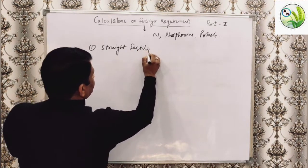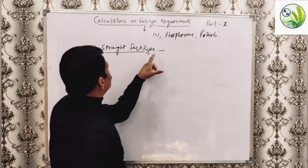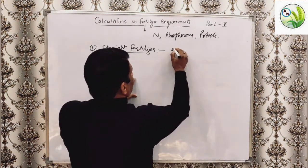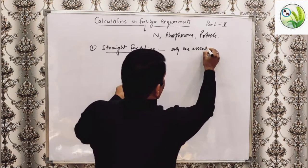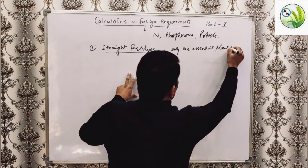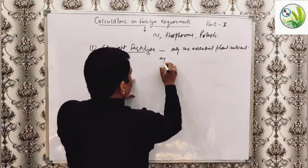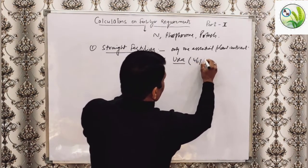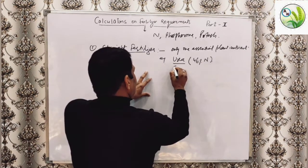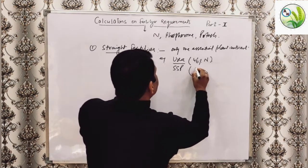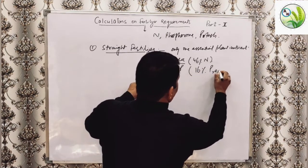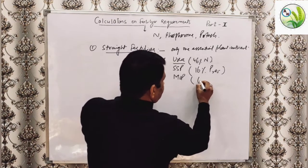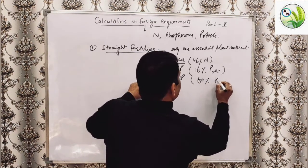These fertilizers can be grouped into three categories. The first one is straight fertilizers. These are those fertilizers which supply only one essential plant nutrient. For example, urea which contains 46% nitrogen; SSP (single superphosphate) which contains 16% P₂O₅, that is phosphorus; and MOP (muriate of potash) which contains 60% K₂O, that is potash.